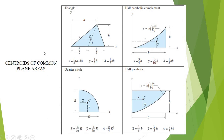It is also very important, prior to solving any problems involving composite areas, that you be very familiar with the centroids of common plane areas. For example, for a triangle, the location of the centroid with respect to this axis is given by the corresponding formula. With respect to the y-axis, considering the height, y-bar is equal to h over 3. And the area, of course, is one-half base times height.